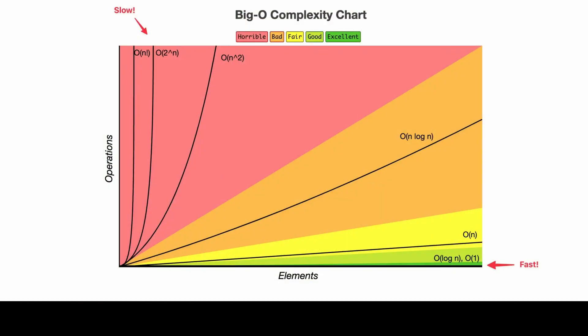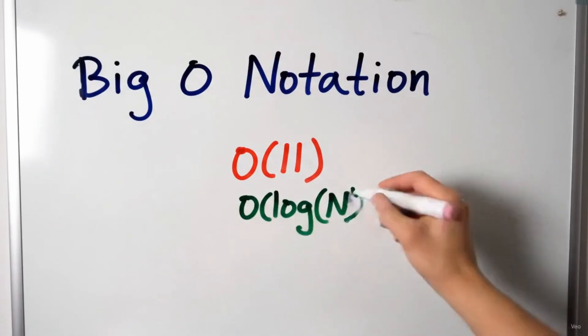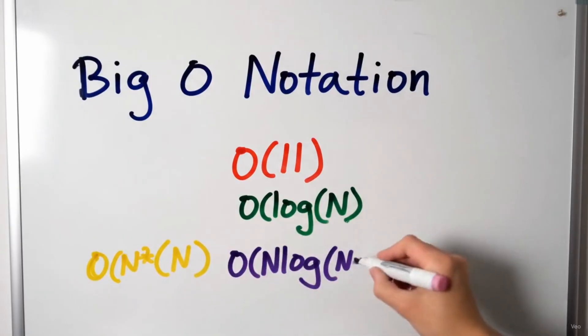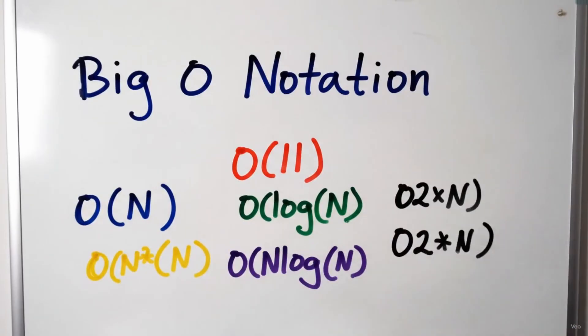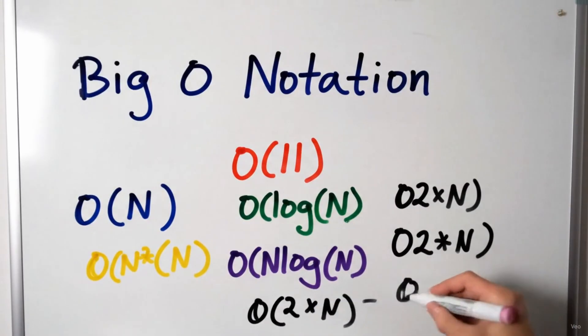Big O of N squared is much, much slower. This happens when every single item in your data needs to be checked against every other item — like if everyone in a classroom has to shake hands with everyone else. The work grows really fast as you get more data. So Big O of 1 is way faster than Big O of N or Big O of log N, but Big O of log N is much better than Big O of N when you have lots of data. Understanding the common complexities — Big O of 1, log N, N, N log N, N squared, and 2 to the N — is super important for job interviews.